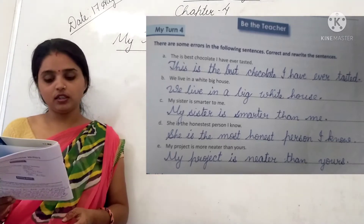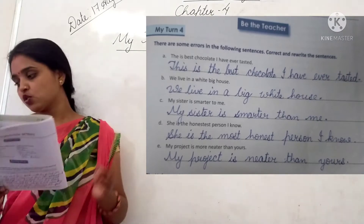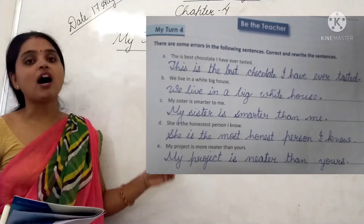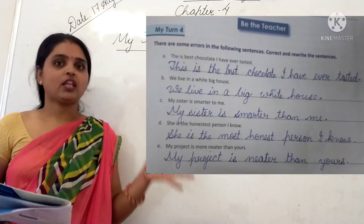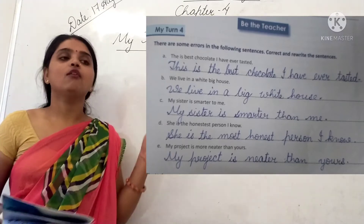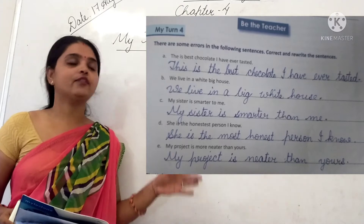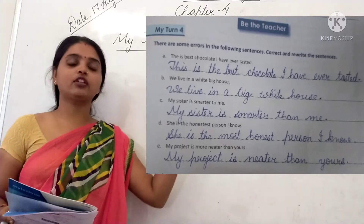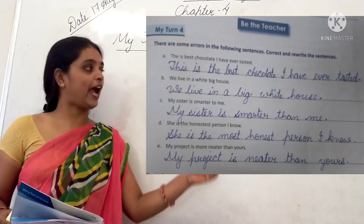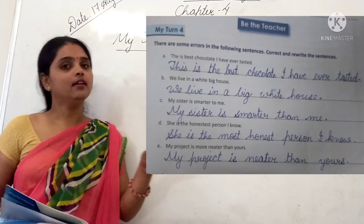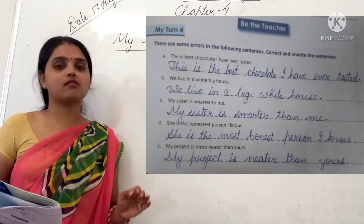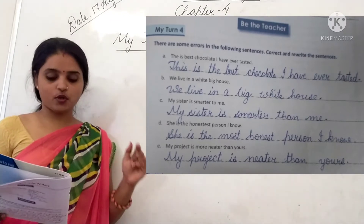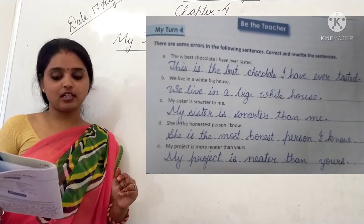Next, question number three: 'My sister is smarter to me.' The answer is: 'My sister is smarter than me.' With comparative adjectives we have to use 'than' — T-H-A-N — after the adjective. So the answer is: 'My sister is smarter than me.'